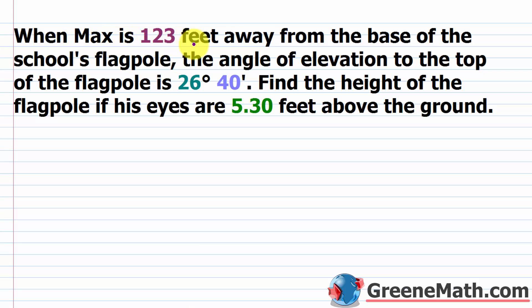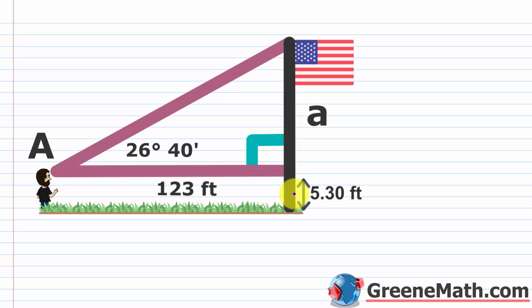Now a word problem: when Max is 123 feet away from the base of a school's flagpole, the angle of elevation to the top is 26 degrees 40 minutes. We want to find the height of the flagpole given that his eyes are 5.30 feet above the ground. Draw a picture to clarify: his eye level is 5.30 feet above the ground, and the total height includes the measured side A plus that 5.30 feet.